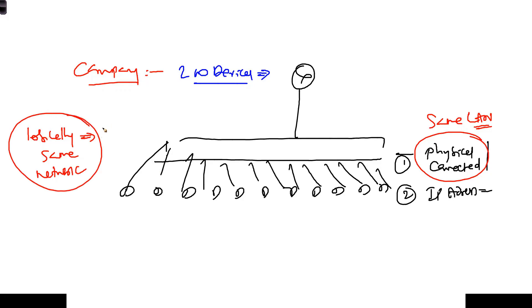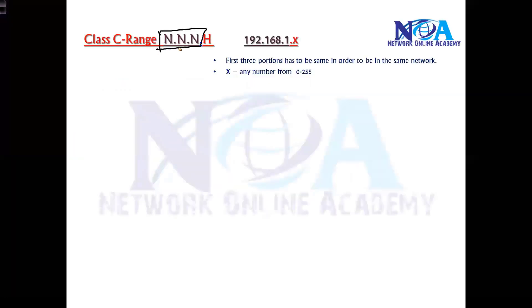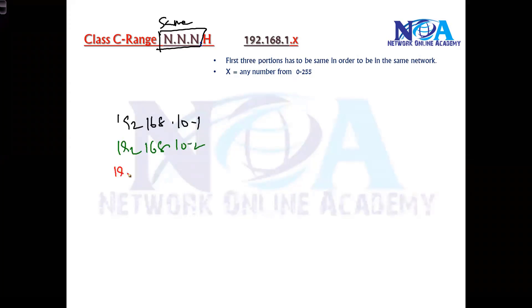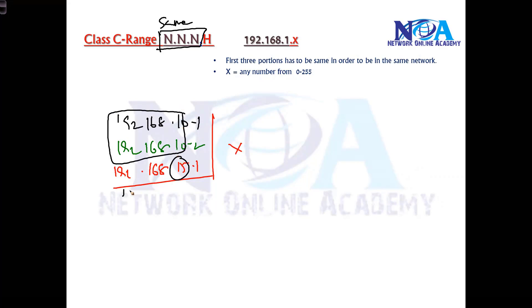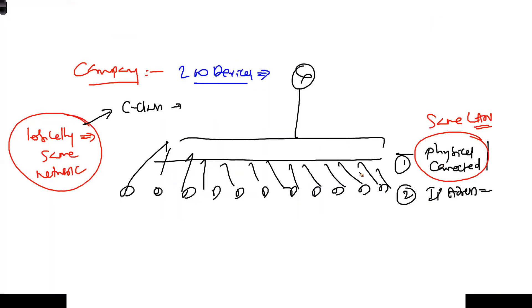Logically being in the same network means the network portion has to be the same. If using C class, the first three portions should be the same — if you change that, it becomes a different network. For example, if you assign 192.168.10.1 and 192.168.10.2 but then assign 192.168.15.1 to a third device, that is not correct because the network portion is different. Logically they become different networks and the communication will not happen.